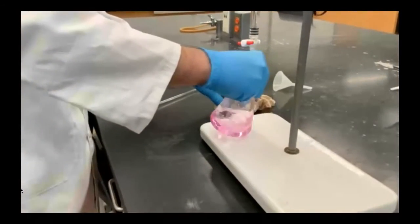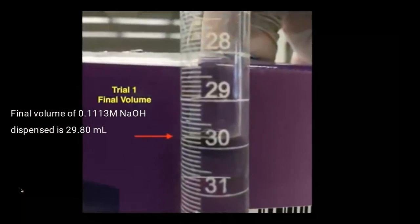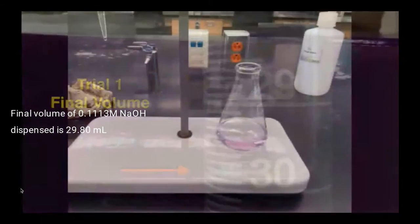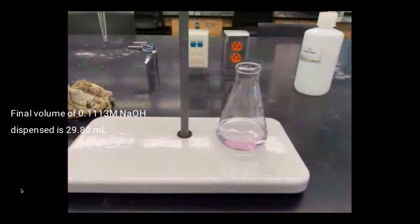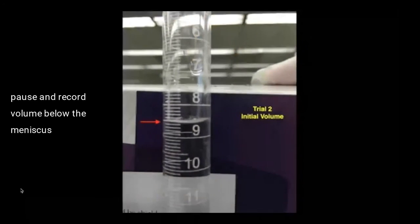Now I've titrated to a pink color and I'm going to record the final volume in my chart. After about a minute, the pink color has dissipated to a faint pink, which is what we want.